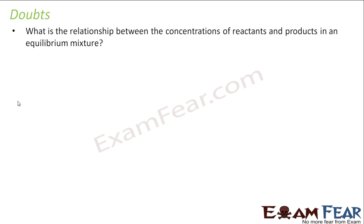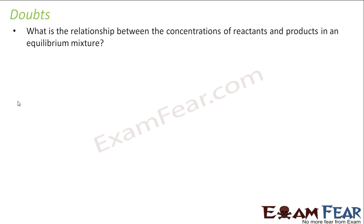We discussed a lot about equilibrium, but we have certain doubts. First doubt is: what is the relationship between the concentration of reactants and products in the equilibrium? For example, I have A plus B gives C plus D. If I start with 10, 10, in equilibrium will it be 2, 2, 8, 8 or will it be 3, 3, 7, 7? What is the relationship? What determines this?